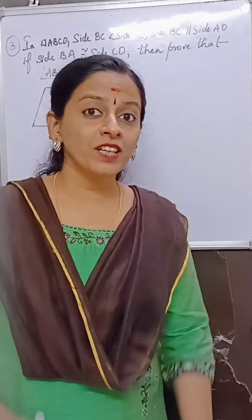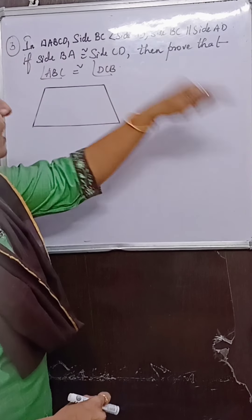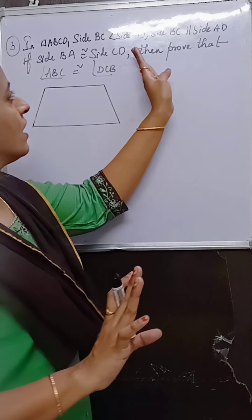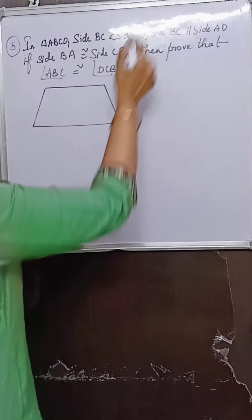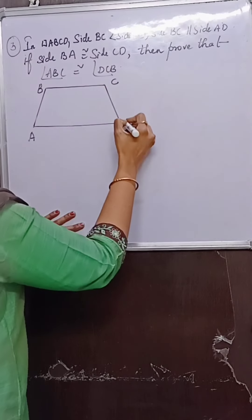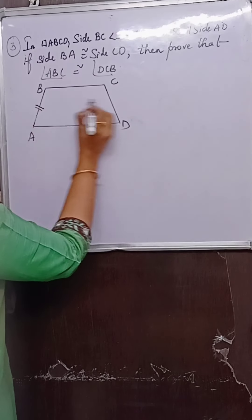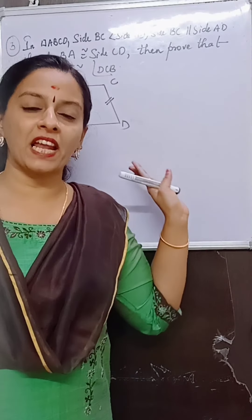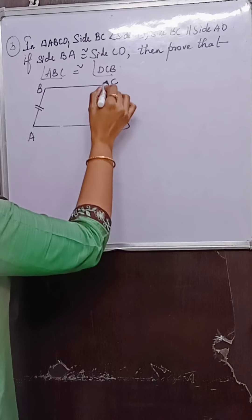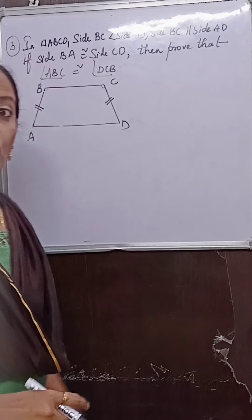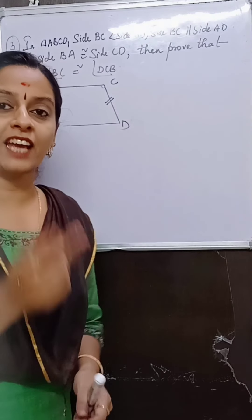Coming to the third and final sum of Practice Set 5.4: In quadrilateral ABCD, BC is parallel to AD — one pair of parallel sides, so it is a trapezium. Side BA is congruent to side CD — non-parallel sides congruent — so this is an isosceles trapezium. Prove that angle ABC ≅ angle DCB.